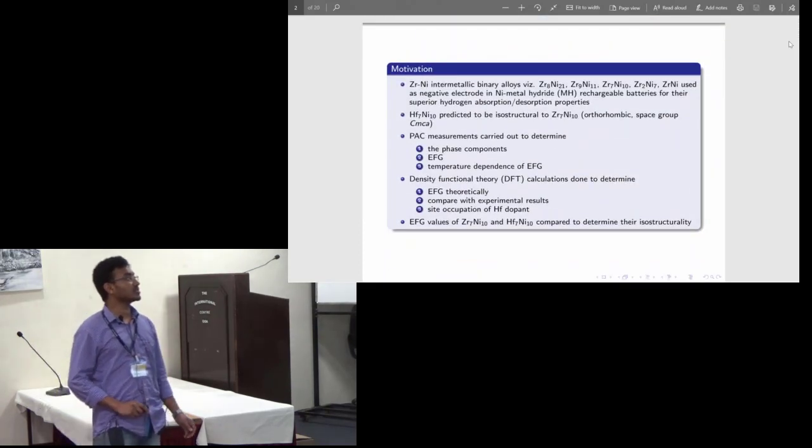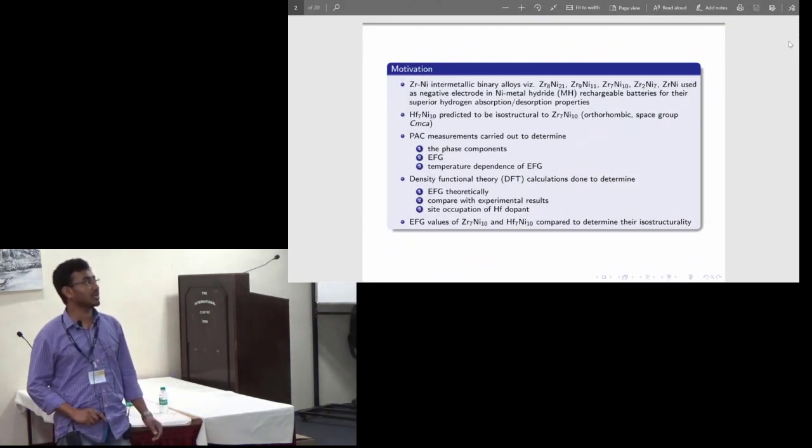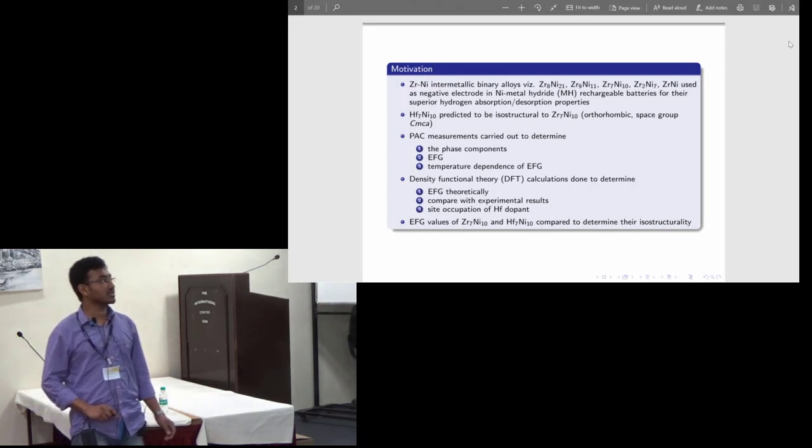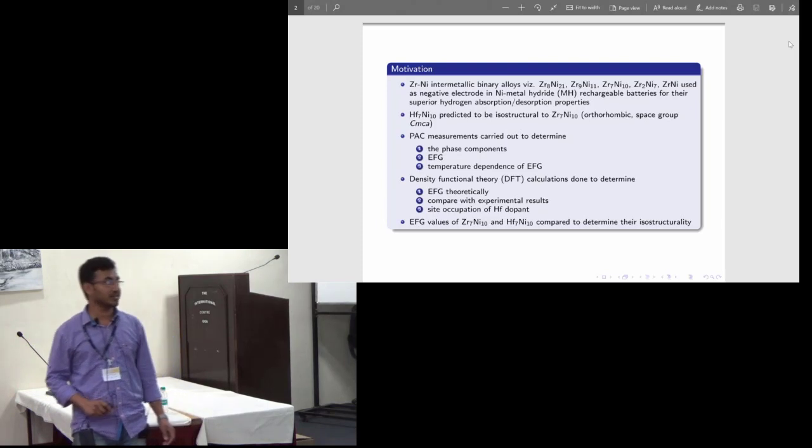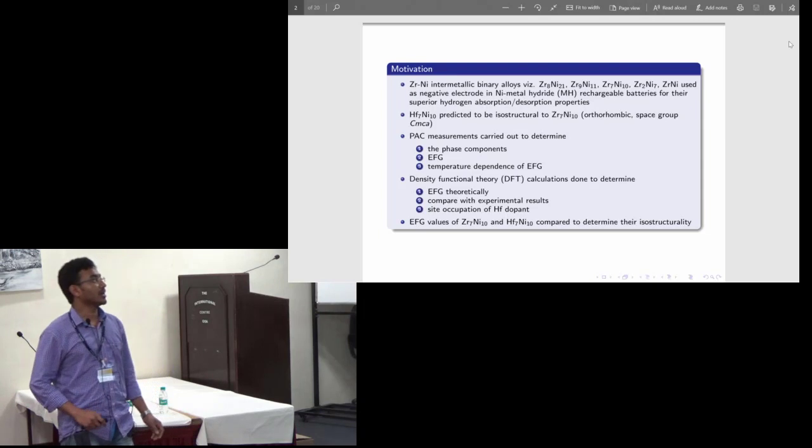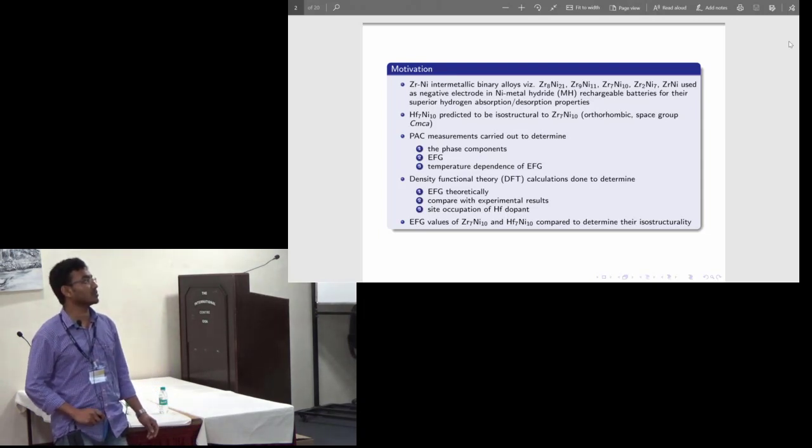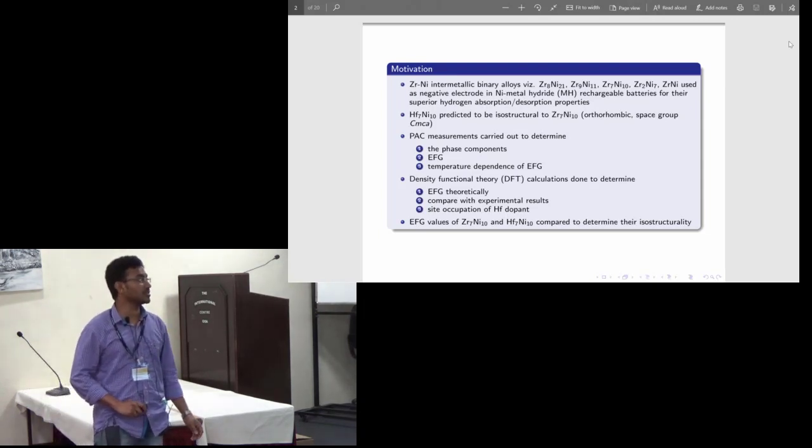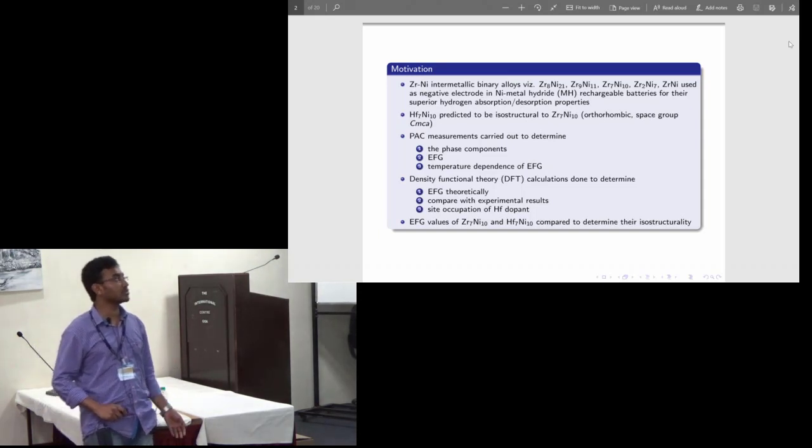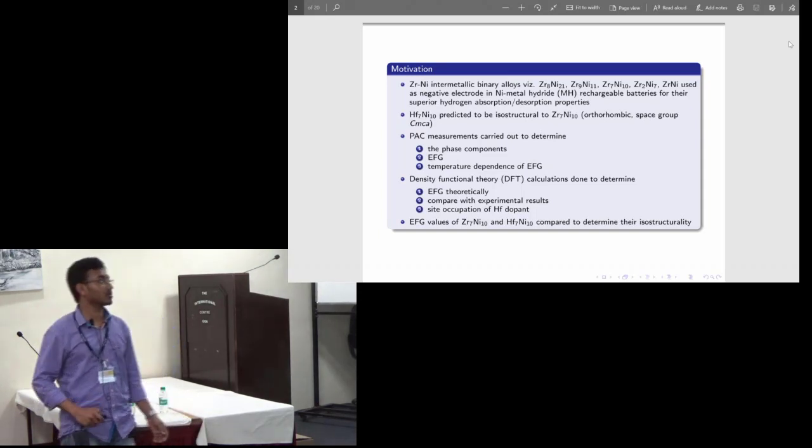The motivation behind this work is that some of the zirconium nickel binary alloys like Zr8Ni21, Zr7Ni10, etc. are used as negative electrodes in nickel metal hydride rechargeable batteries due to their superior hydrogen absorption-desorption properties.